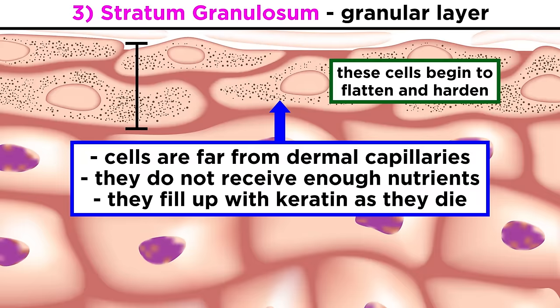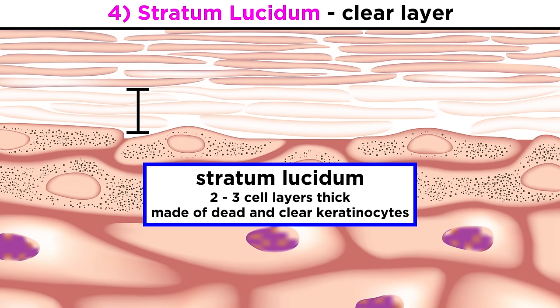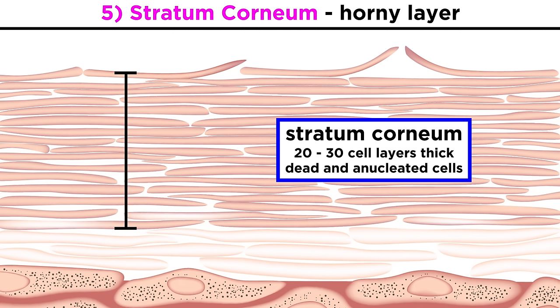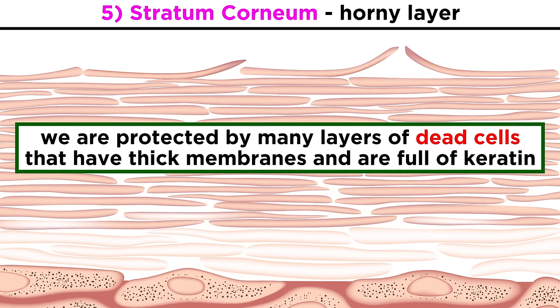Above this is the stratum lucidum, or the clear layer. This is two or three cell layers thick, made of dead keratinocytes that have become flat and clear. This is where they begin to aggregate into arrays called tonofilaments. And lastly, there is the stratum corneum, or horny layer. This outermost section is twenty to thirty cell layers thick, and all of these cells are anucleated, meaning the nucleus has disintegrated. So it's incredible to think that all the cells covering the outside of your body are actually dead, but they are dead in a specialized way, with thick plasma membranes surrounding lots of keratin. These dead cells protect all the living ones inside from all the outside dangers.